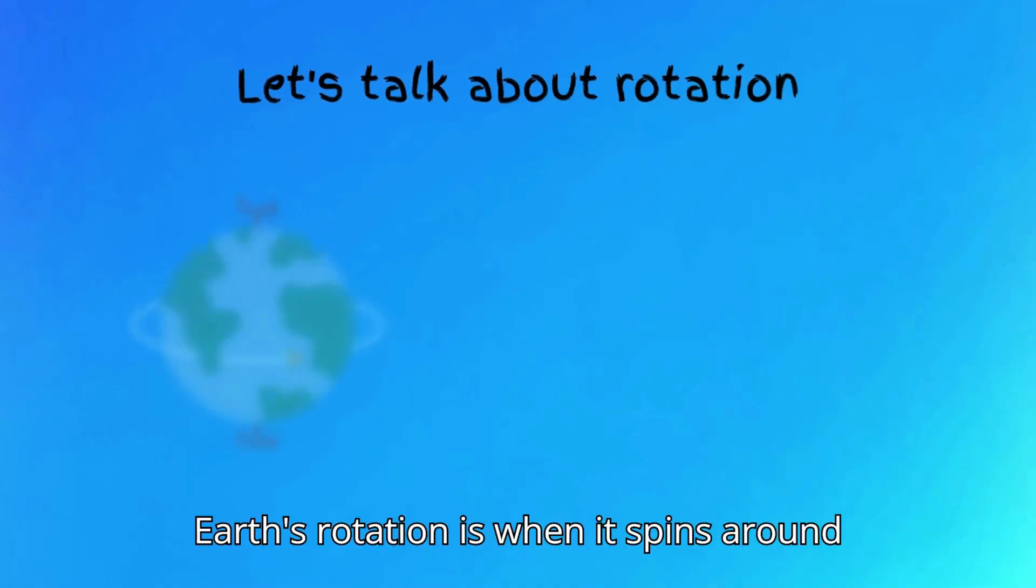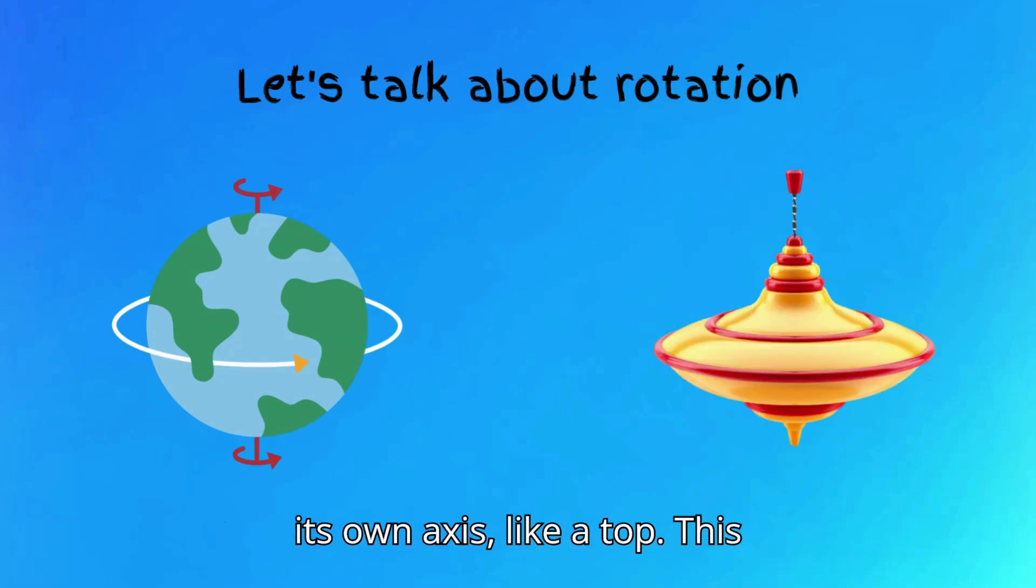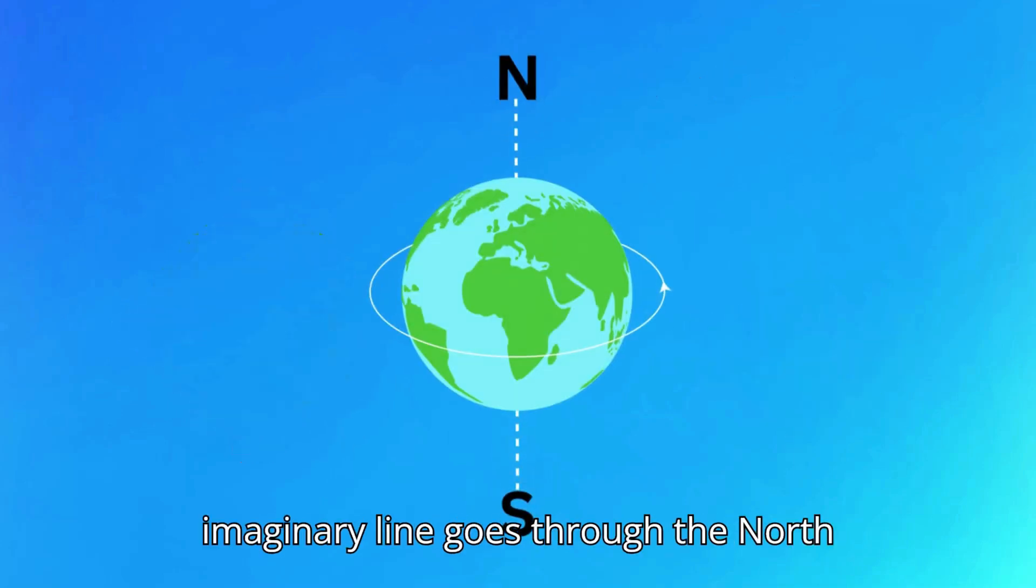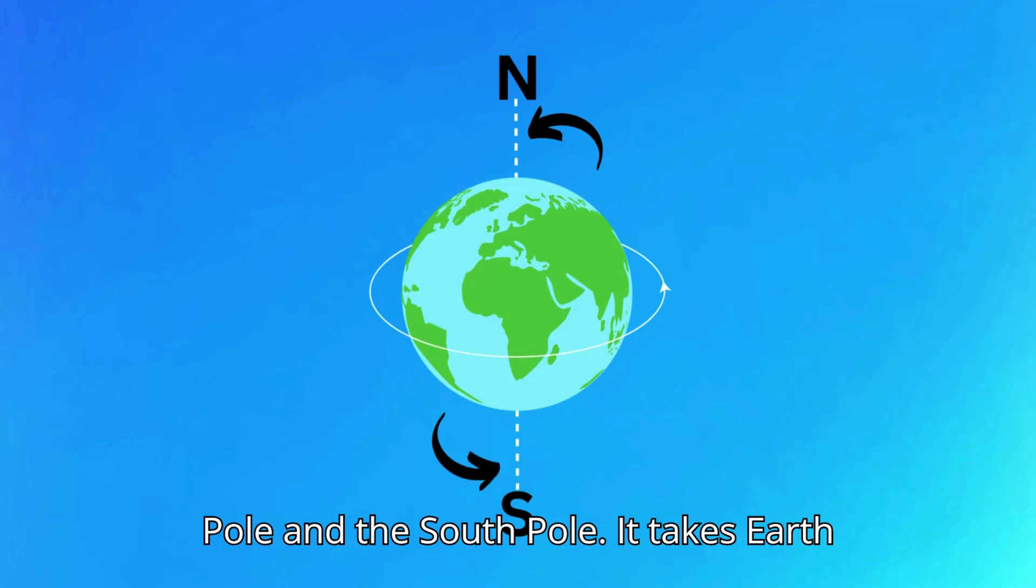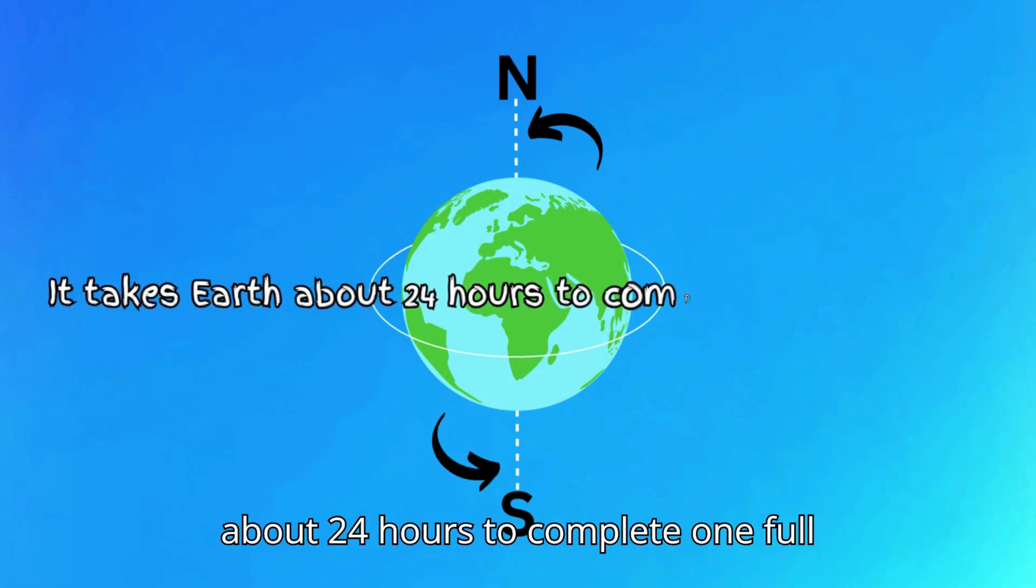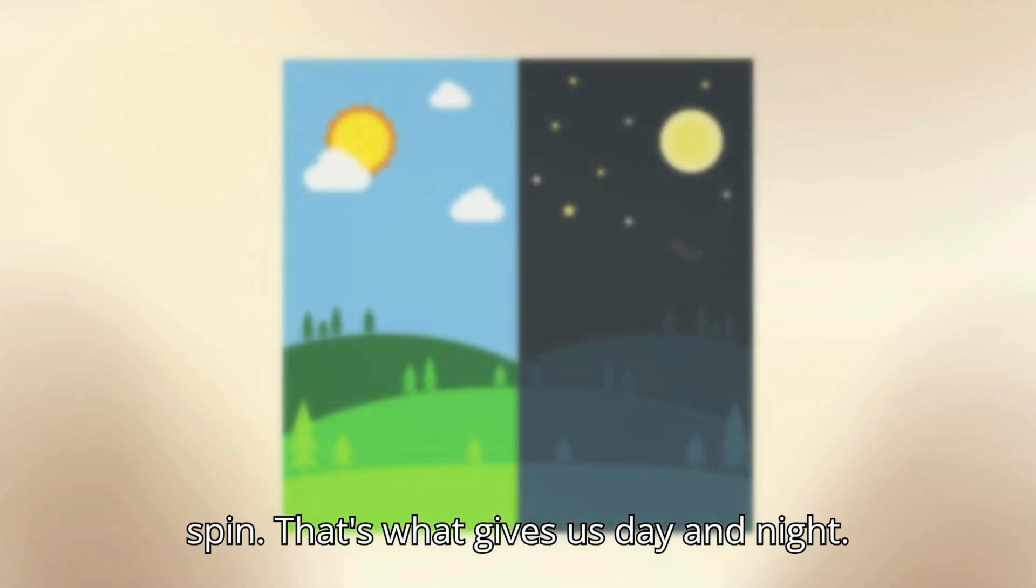First, let's talk about rotation. Earth's rotation is when it spins around its own axis, like a top. This imaginary line goes through the North Pole and the South Pole. It takes Earth about 24 hours to complete one full spin. That's what gives us day and night.